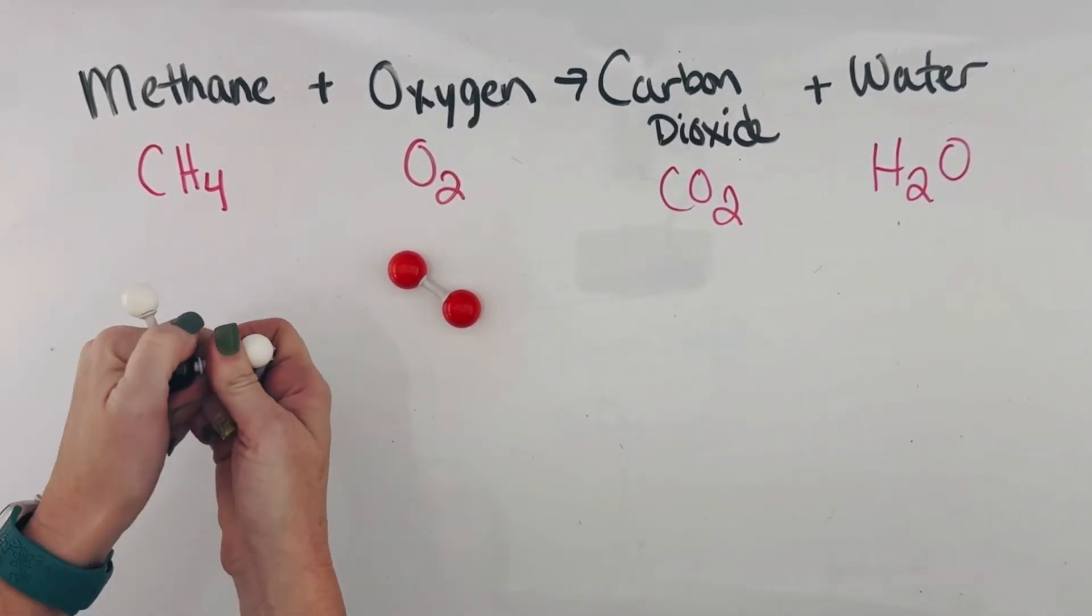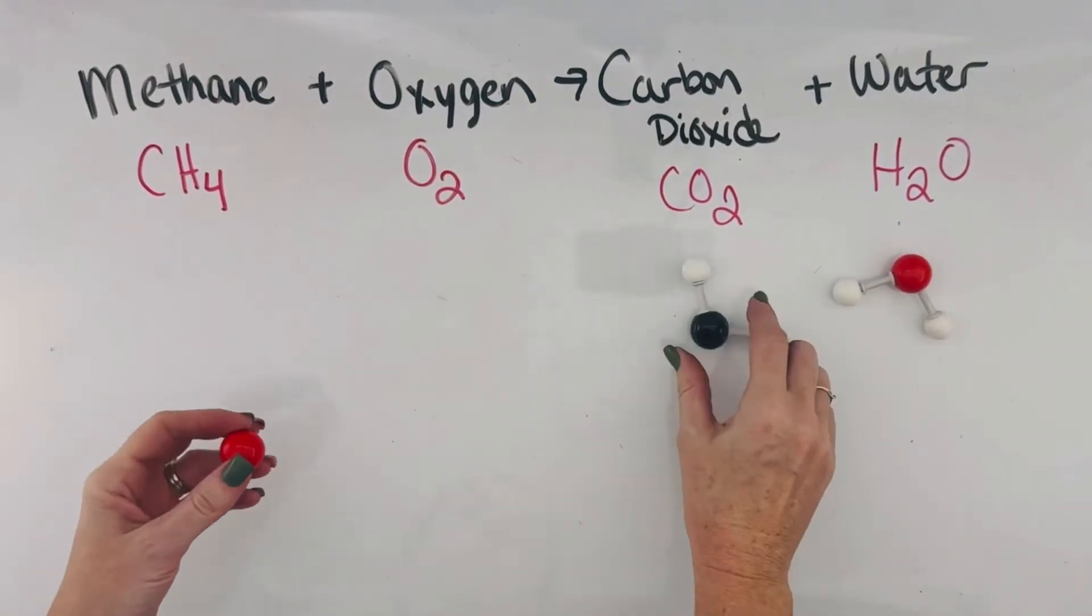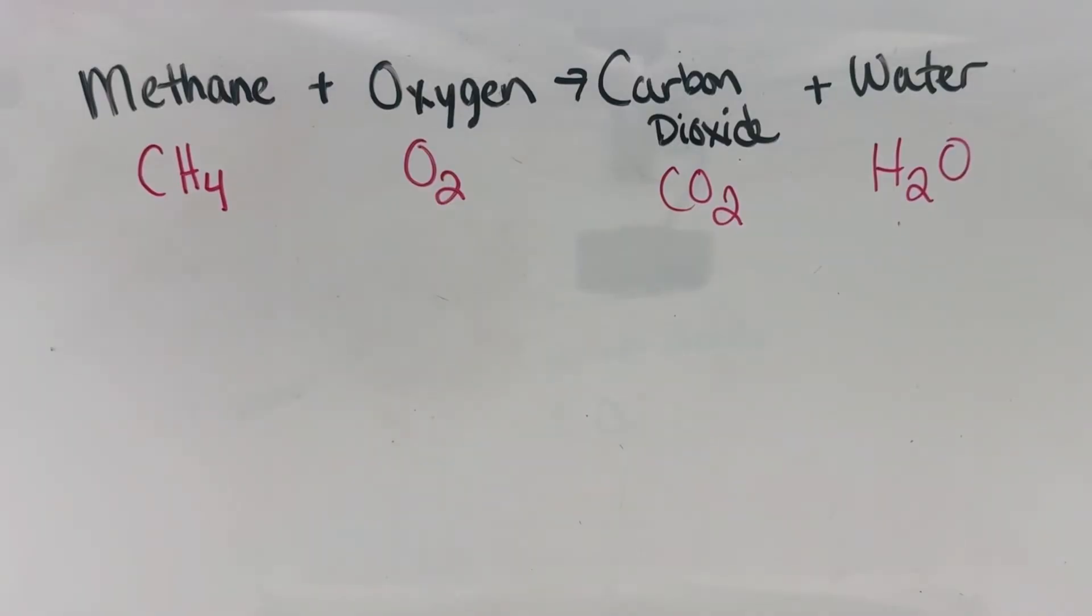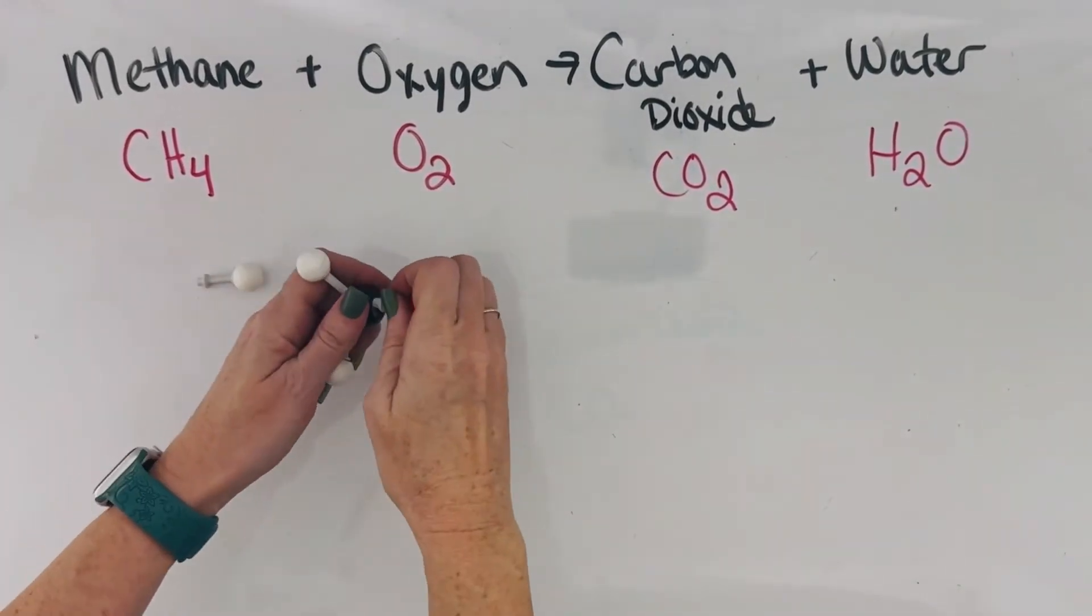But when we try to break apart that methane and rearrange it with the oxygen, we can form one H2O and one CO2, but there's some oxygen atom left over. And that can't happen in real life.